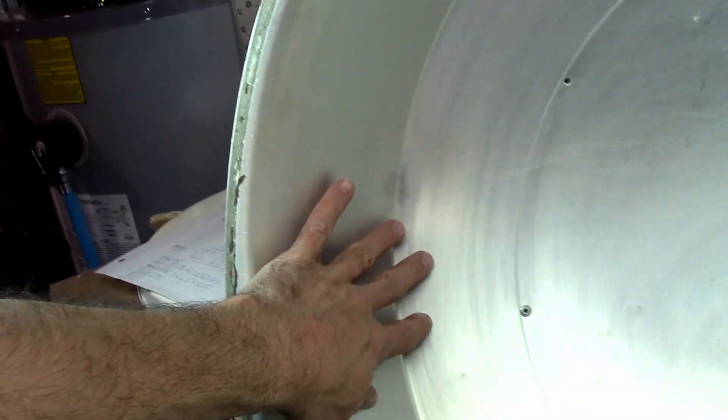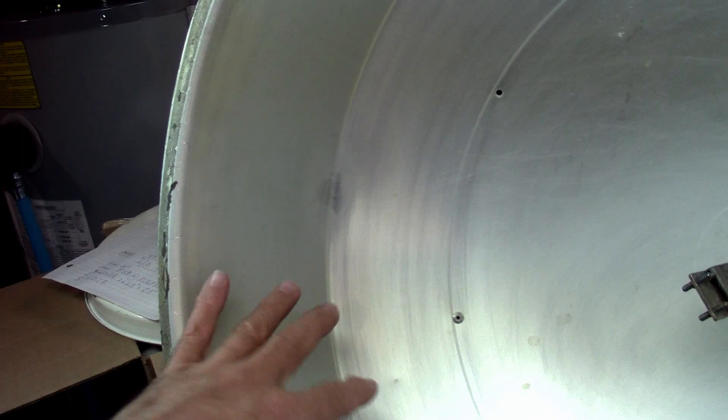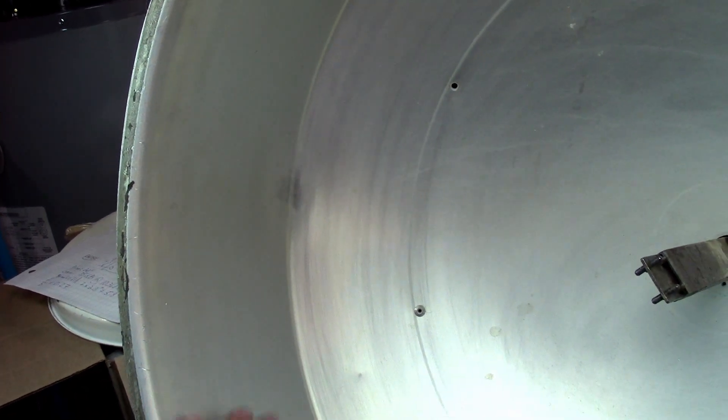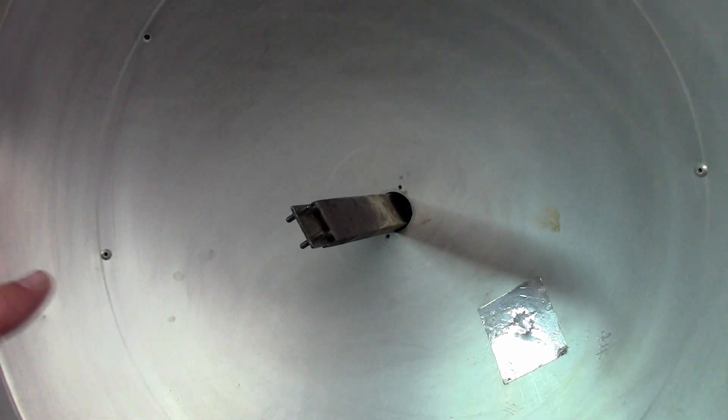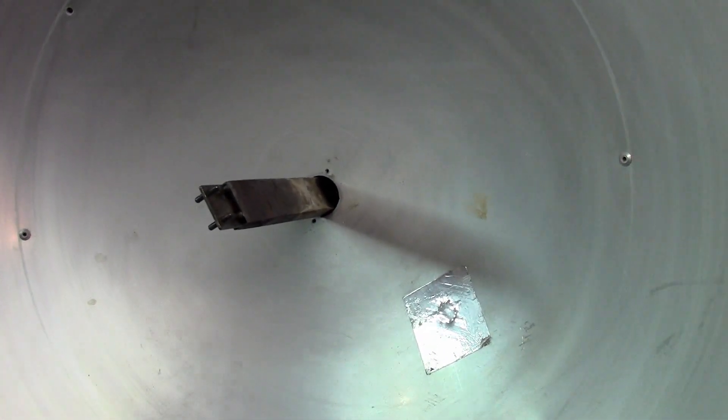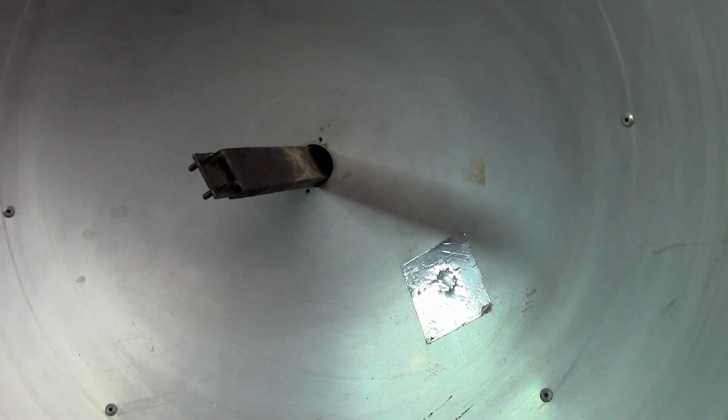This wall here, I'm pretty sure it's used to cut the side lobes. Because it's parallel to the radiation, it has no impact on the gain. It's just to contain the side lobes, I think.